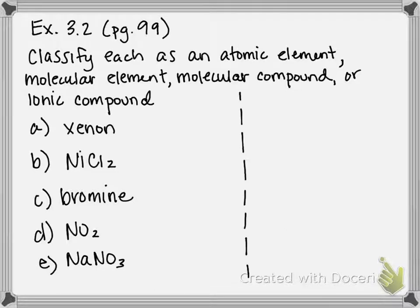This is example 3.2 on page 99 of your textbook. Here we are making sure that we can classify elements and compounds into their different categories. This is setting up the foundation for being able to name compounds and write formulas for them. You have to be able to recognize what type of element or compound you're dealing with.